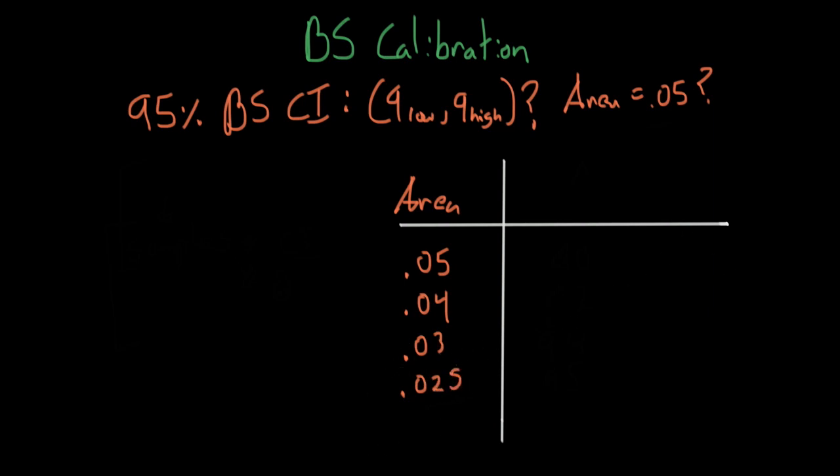And depending on how good they are, and we're going to define how good they are by the probability that the true population parameter is inside the confidence interval, we'll choose the one of these, the area calculation down here, that is closest to a true 95% confidence interval.